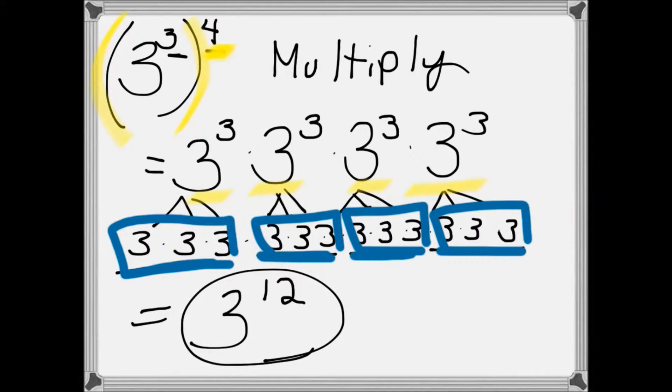We have 1, 2, 3, 4, 3 to the 3rd 4 times. When we add the number of times we multiplied by 3, we will get a total of 12. So if it's a power to a power, you multiply the exponents.